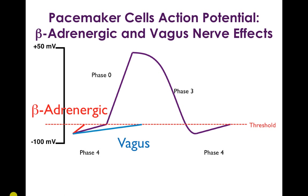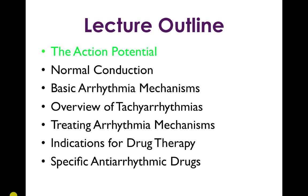Vagus nerve innervation will tend to slow down the phase 4 depolarization in pacemaker cells, while beta adrenergic stimulation will tend to speed it up, leading to a faster or slower heart rate. That covers what we need to know about the action potential.